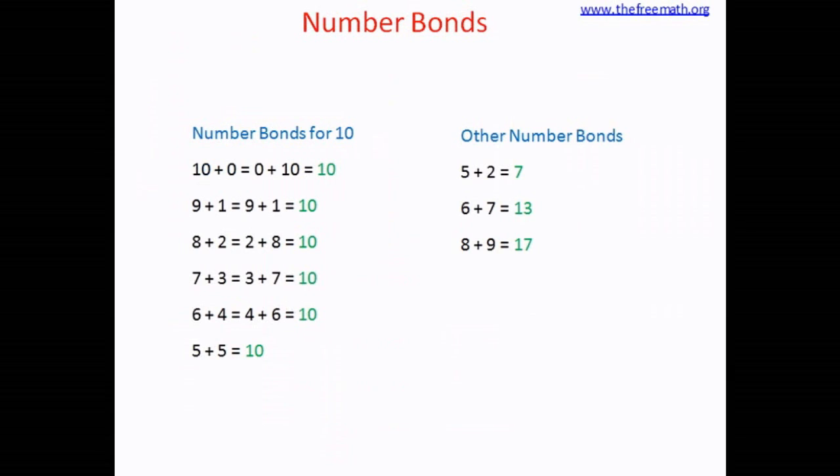Some of the other number bonds are 5 plus 2 equals 7. Now how do I know 5 plus 2 equals 7? 5 plus 1 equals 6. That means 5 plus 2 must be 7. Again I am doing this calculation here. I am calculating why 5 plus 2 equals 7. If I know my number bonds well I won't have to calculate. The moment you say 5 and 2 I automatically say 7.